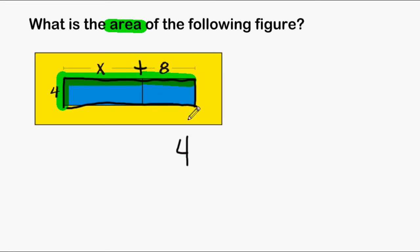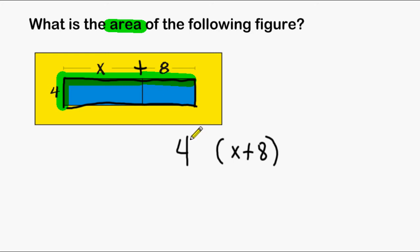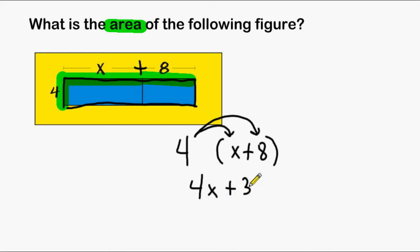So if one dimension is 4 and the other dimension is x plus 8, we can multiply those two dimensions together to get the area. Because we have a number written right outside of the parentheses, we should recognize that we may use the distributive property to simplify our expression. We must multiply this 4 by each term inside our parentheses: 4 times x can be written as 4x, and 4 times 8 may be written as 32.